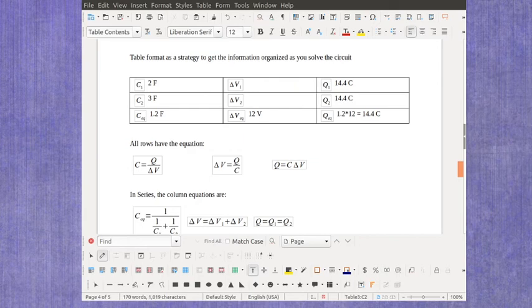So that means I've got 14.4 here and 14.4 here. To come back and find my voltages then, I would need to fill in the charge divided by the capacitance. So 14.4 divided by 2 gives me the 7.2.